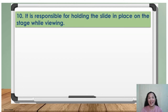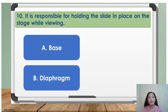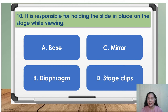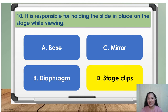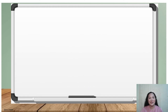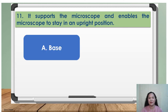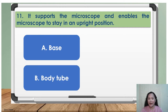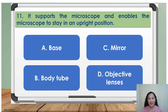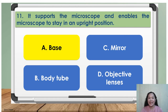Number ten: it is responsible for holding a slide in place on the stage while viewing. A. Base, B. Diaphragm, C. Mirror, D. Stage clips. The answer is D, Stage Clips. Number 11: it supports the microscope and enables it to stay in an upright position. A. Base, B. Body tube, C. Mirror, D. Objective lenses. The answer is A, Base.